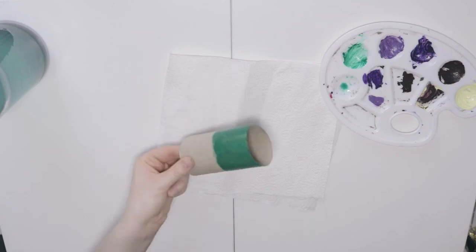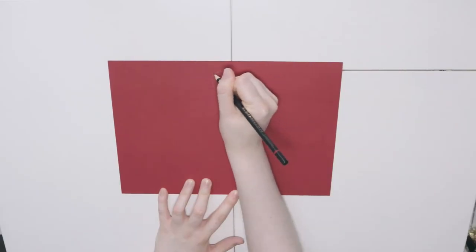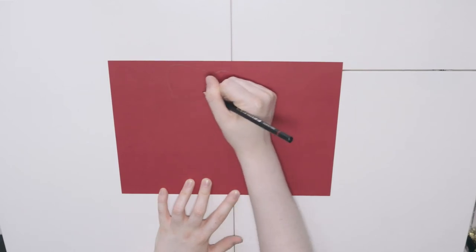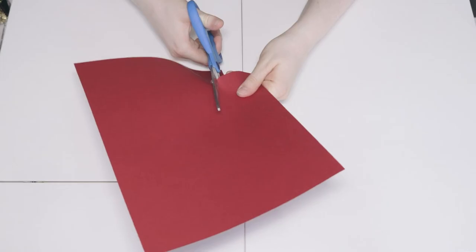Set that aside to dry and take out your coloured paper. Again, you can choose whatever colour you like. Draw the shape of a bowtie and then cut it out.